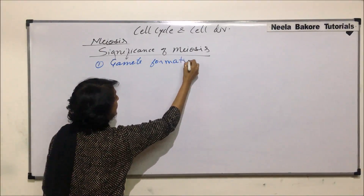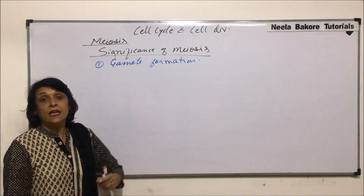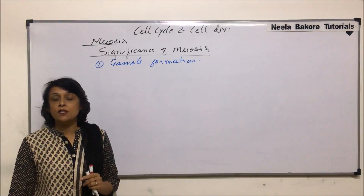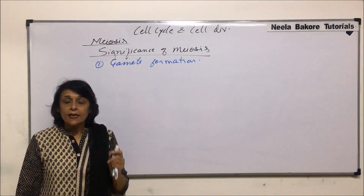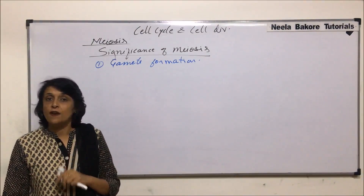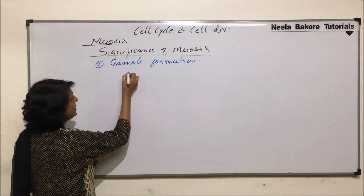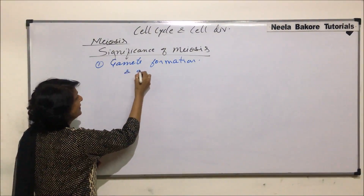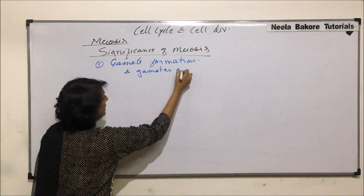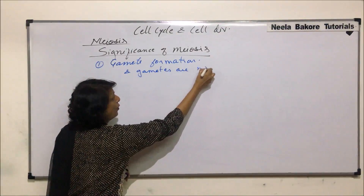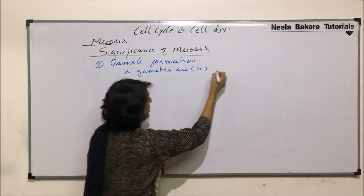And because these gametes are haploid, that is how every species is able to attain its species-specific chromosome number. So gamete formation — and the gametes being haploid — helps in sexual reproduction.